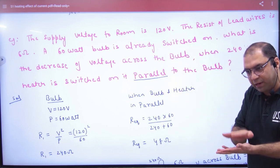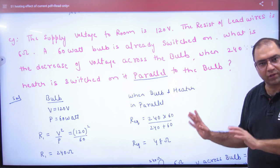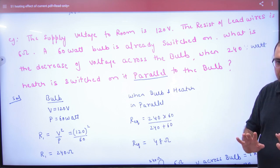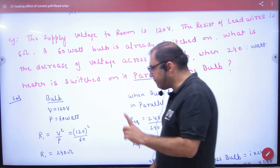So first, the bulb was alone. Now, what's in parallel with the bulb? The heater. Rule number one: when you have any question like this, don't start with calculations. First of all, the first work is finding the resistances.